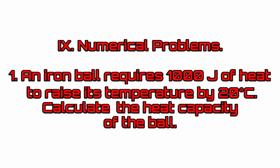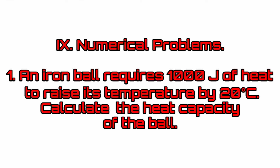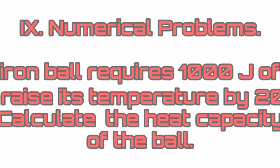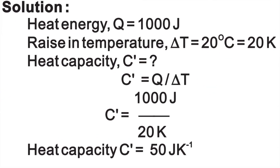Numerical problems. Question 1: An iron ball requires 1000 joules of heat to raise the temperature by 20 degrees C. Calculate the heat capacity of the ball. Heat energy Q = 1000 J; rise in temperature ΔT = 20°C = 20 K. Heat capacity C' = Q / ΔT = 1000 J / 20 K. Therefore, heat capacity C' = 50 J K⁻¹.